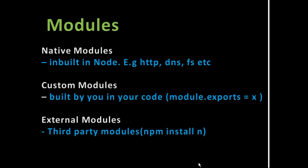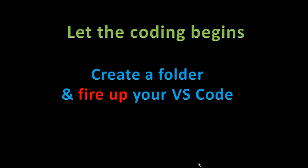Let's talk explicitly about modules. We have native modules, custom modules, and external modules. Native modules are built-in modules that come with your Node runtime — examples include HTTP, DNS, and fs (file system). Then you have custom modules that you build yourself and export. External modules are ones you install, like the Express framework, Sails framework, or Axios. Modules are like super libraries that bring multiple things together to achieve something big.